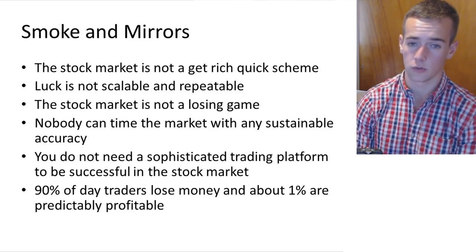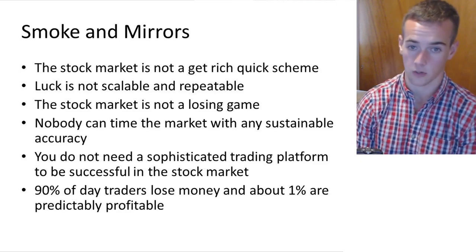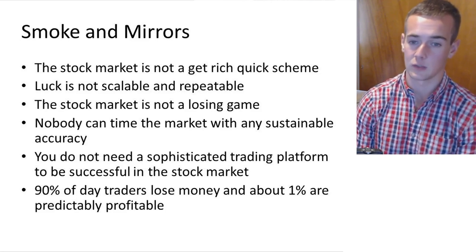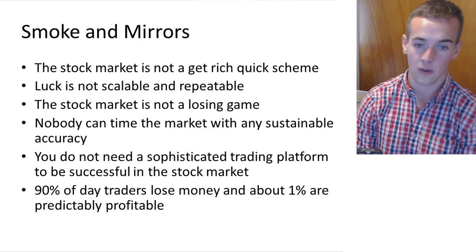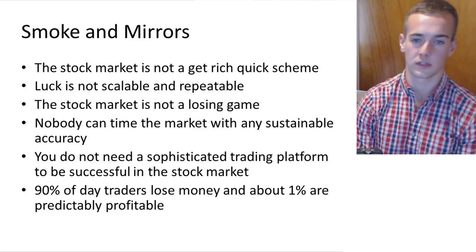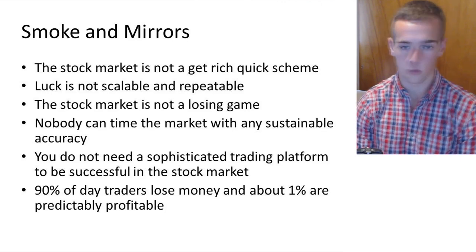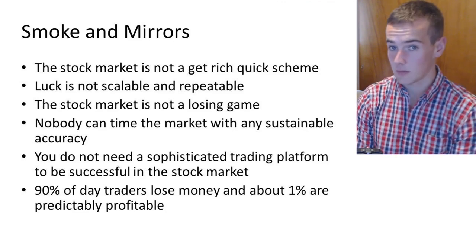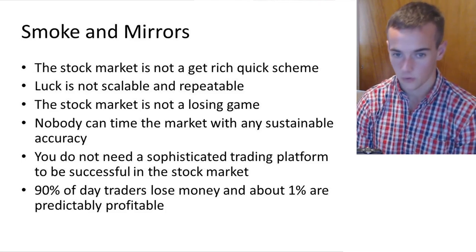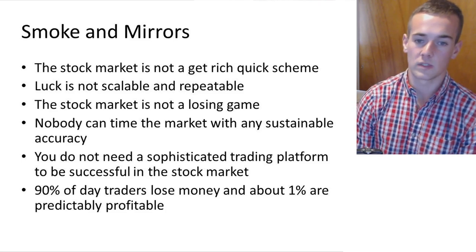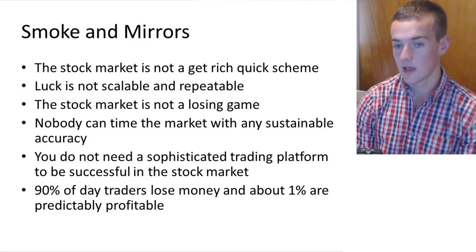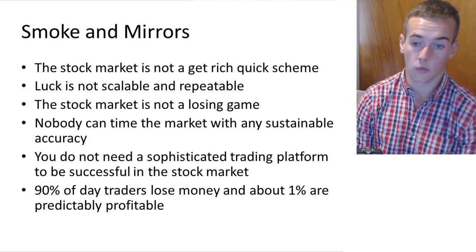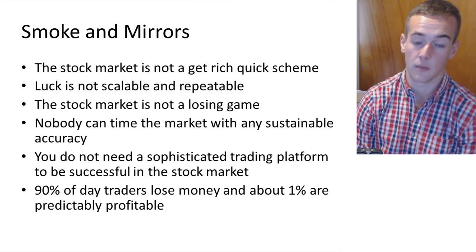We're seeing a lot of people in the news talking about the upcoming bear market or market correction. If you look into the history of these people, a lot of them have made doomsday prophecies every single year prior. If I told you there was going to be a market correction in 2012, 2013, 14, 15, 16, 17, and it happens in 2018 — am I accurate? Because I guessed wrong the seven or eight times before then. I wouldn't follow anybody who tells you that they can accurately and sustainably time the market.